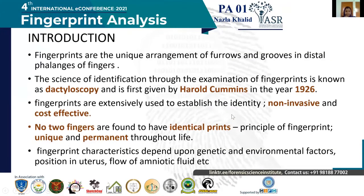The science of identification through fingerprint was known as Dactyloscopy and was given by Harold Cummins in 1926. The development of fingerprint characteristics began in the 5th to 7th week and is completed by the 21st to 24th week of intrauterine life. They are highly influenced by genetic and environmental factors. Genes and DNA seem to fold in a certain manner that results in this random pattern of ridge arrangement, giving us unique, easily classifiable, and permanent fingerprints, which remain unaltered — altered only in cases of injuries, cuts, and burns — and are usually restored once healed.